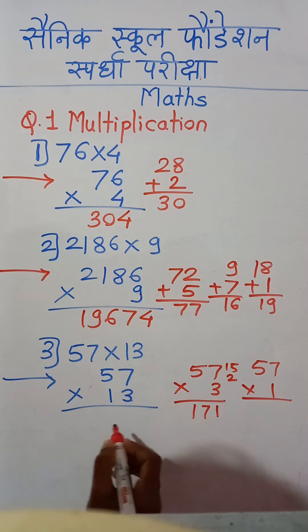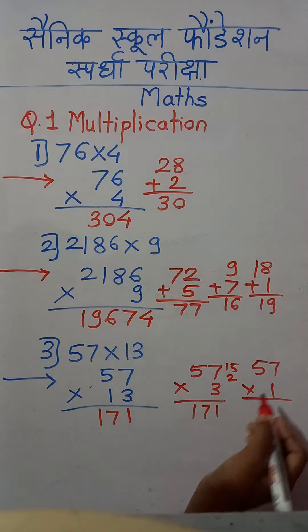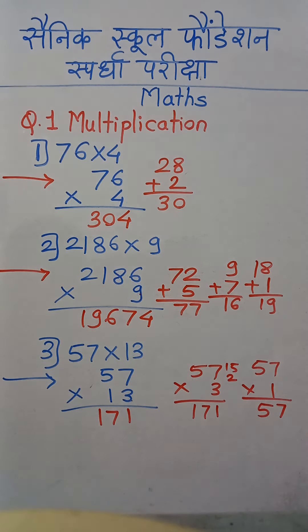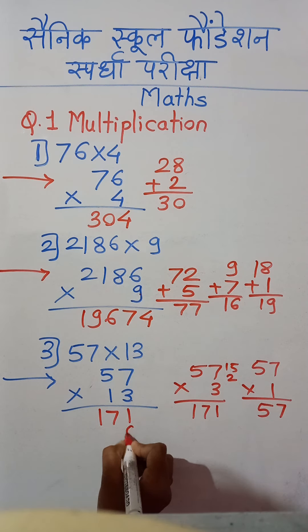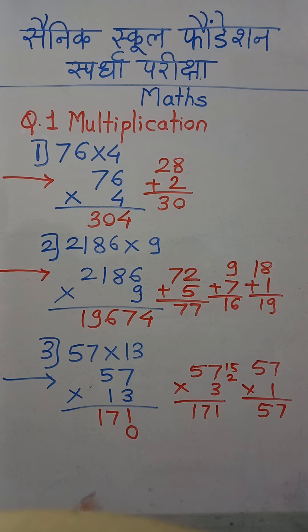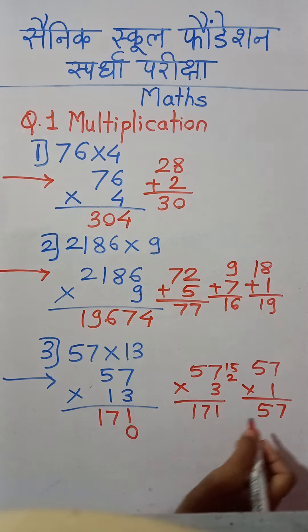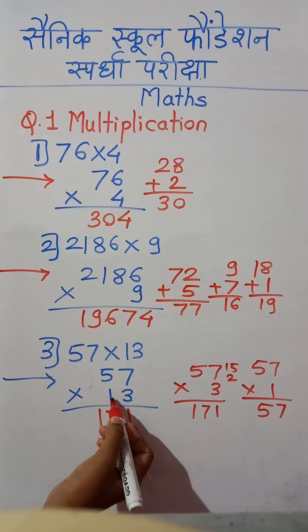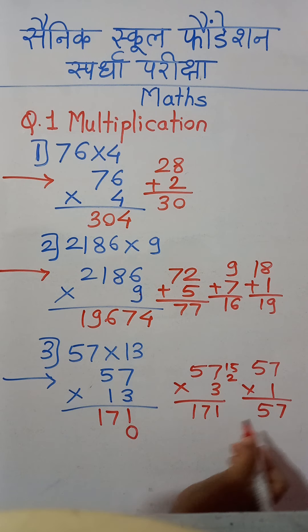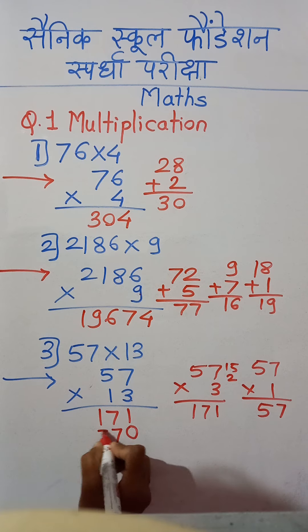We write 171 directly here. Now again we multiply the complete number 57 by tens place digit 1: 1 times 7 is 7 and 1 times 5 is 5, giving 57. But we will not write this answer 57 directly — we must write 0 at the units place digit first before writing the answer of this multiplication, because we are multiplying the tens place digit.